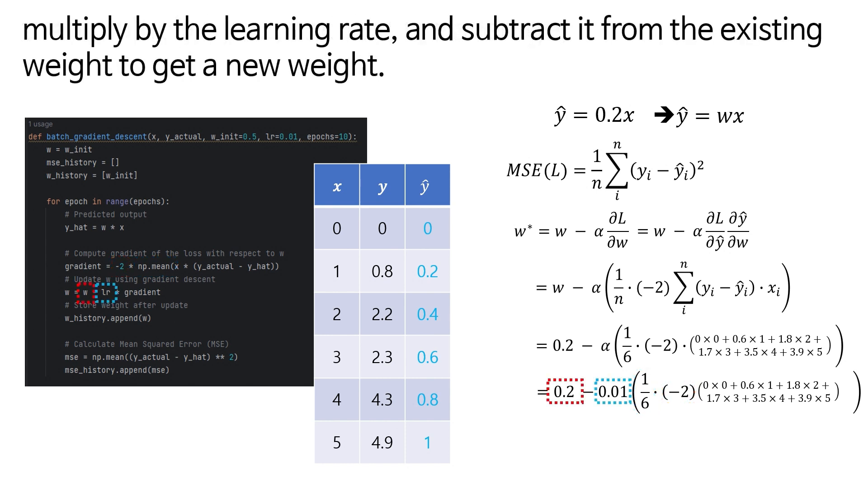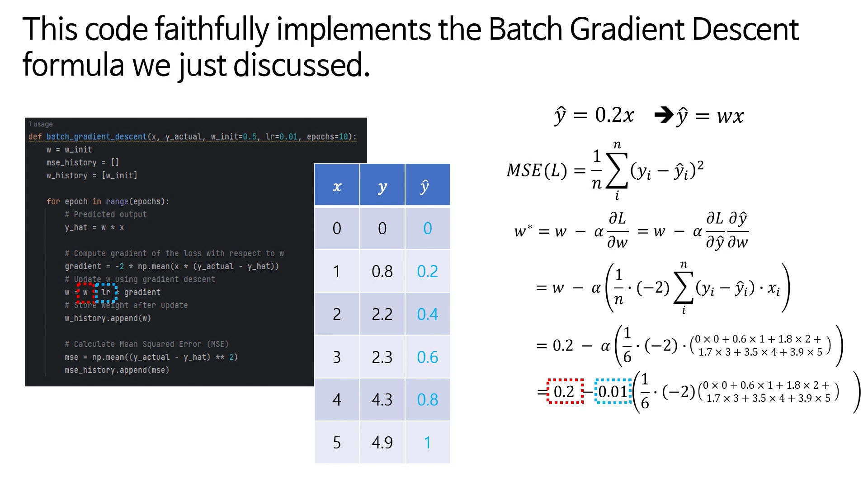multiply by the learning rate, and subtract it from the existing weight to get a new weight. This code faithfully implements the batch gradient descent formula we just discussed.